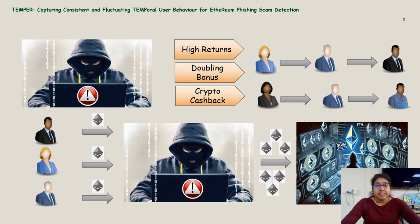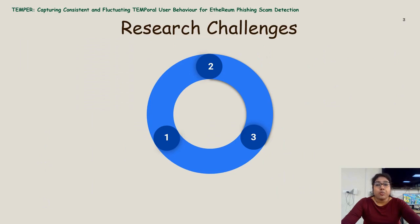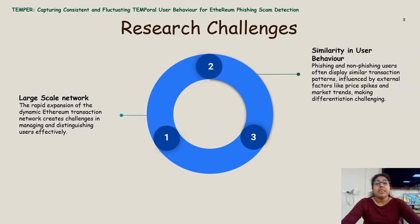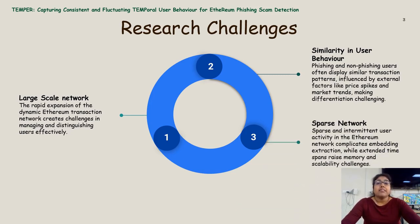To mitigate this problem, we analyze the domain and identify several research challenges. The first one is the large scale of the network, the second one is the similarity in user behavior, and the third one is a sparse network.